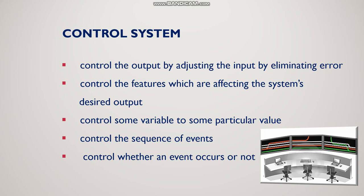A control system controls variables that affect the system's desired output. For example, if a system gives temperature, temperature is the output variable we have to control. If a motor gives speed of a shaft, speed is the output parameter, and if there is an error in speed, we adjust the input to correct it. We can also control the sequence of events, or control whether an event occurs or not, using control system concepts.